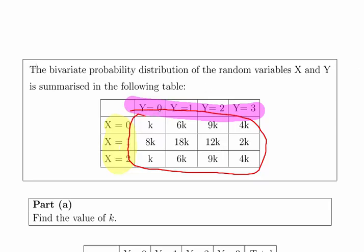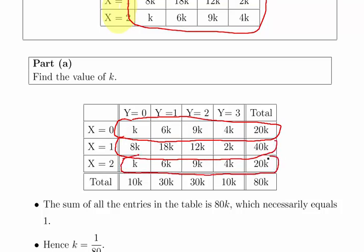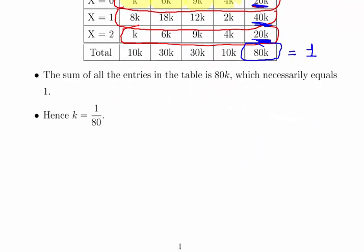The first question asks us to find the value of K. Essentially we have to calculate all the marginal probabilities — add up all the rows or all the columns. We get K + 6K + 9K + 4K = 20K for one row, then 40K and 20K for the others, giving us 80K in total. Since 80K must equal 1, K is equal to 1 over 80.